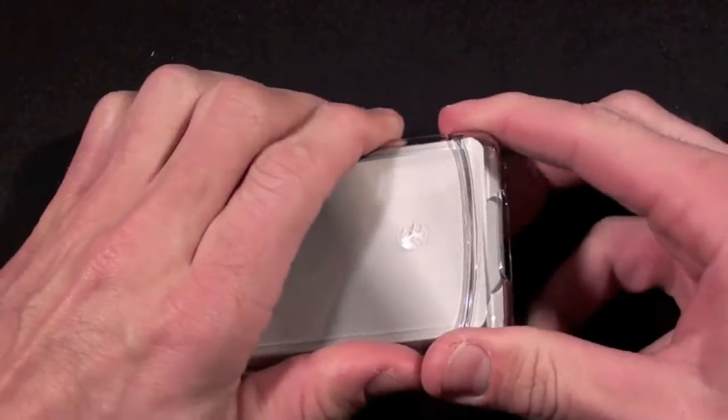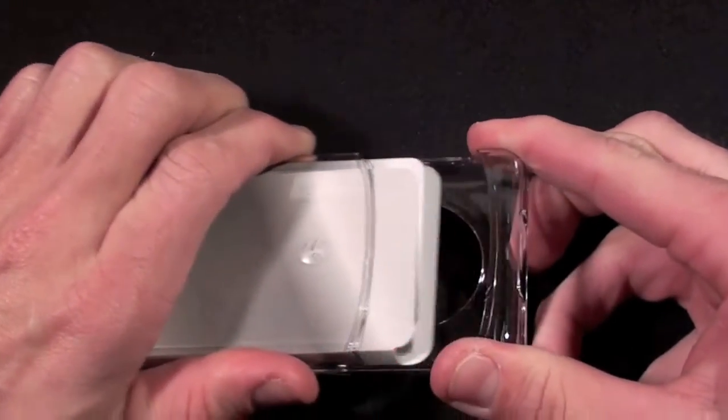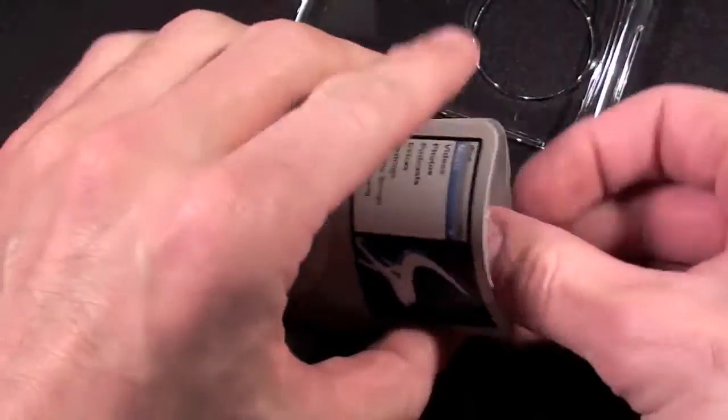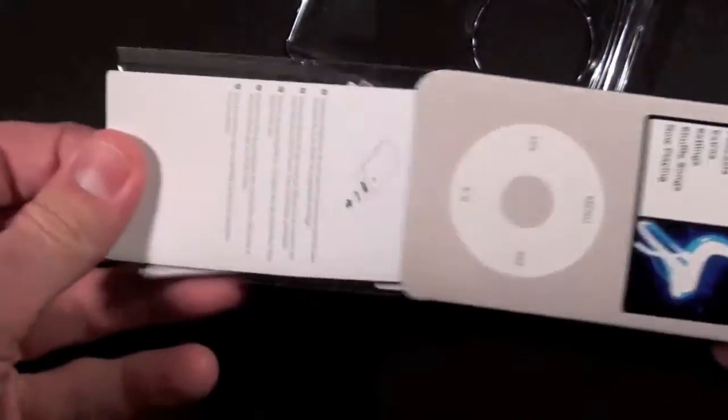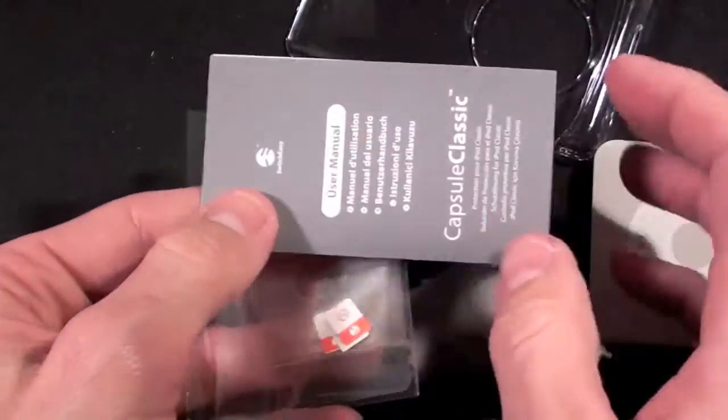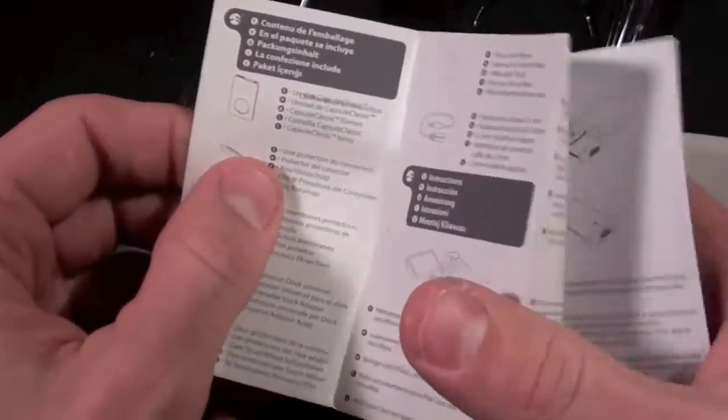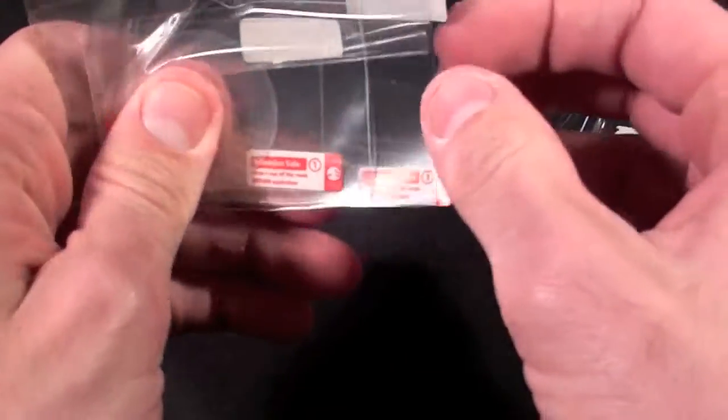Here we have the case, and if we pull this apart, these are the extras that we get. We should have the screen protectors in here, the microfiber cloth, the Capsule Classic installation guide, and the screen shields.